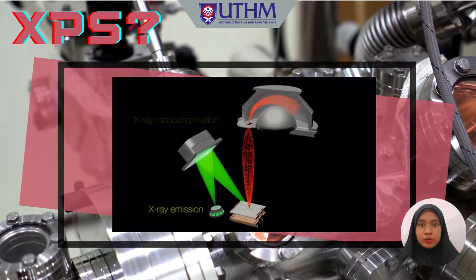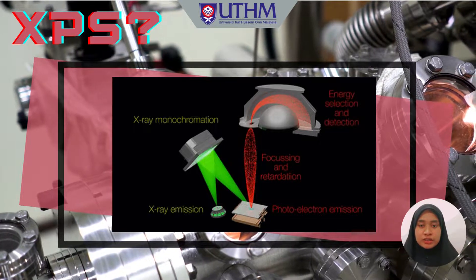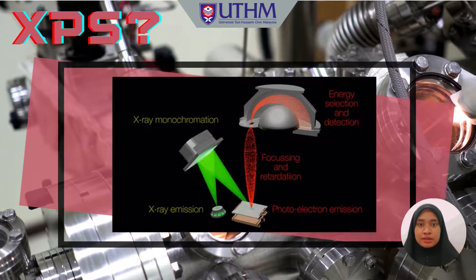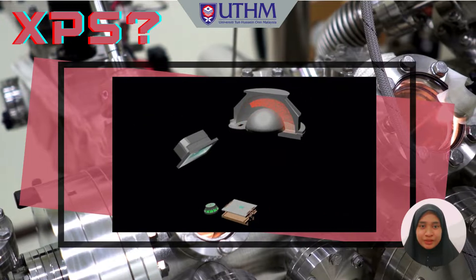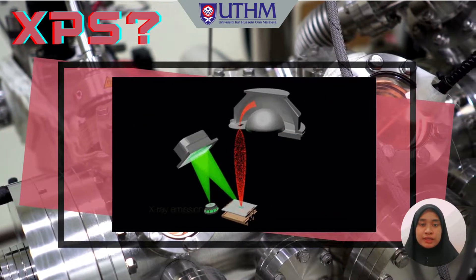Photo-Electron Spectrum is recorded by counting ejected electrons over a range of kinetic energies. The energies and intensities of the photo-electron peaks enable identification and quantification of all surface elements except hydrogen.